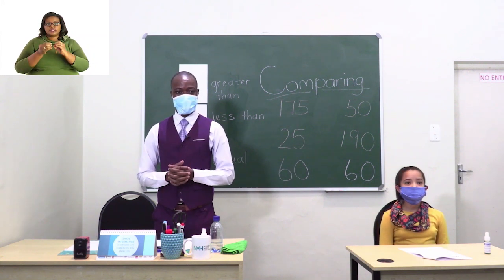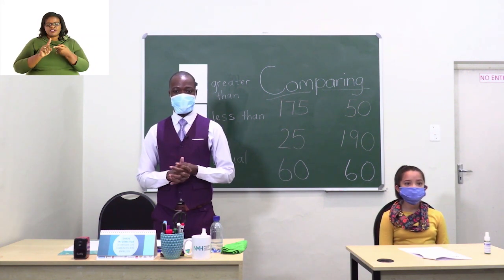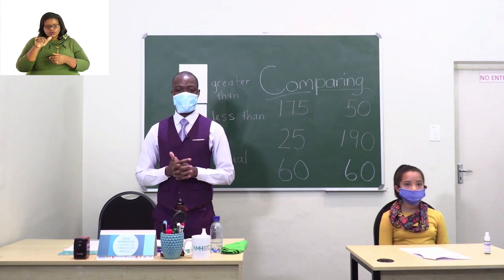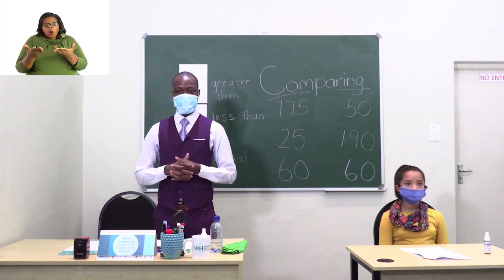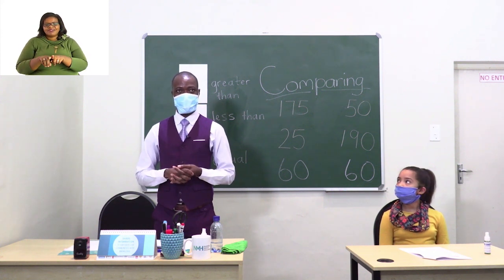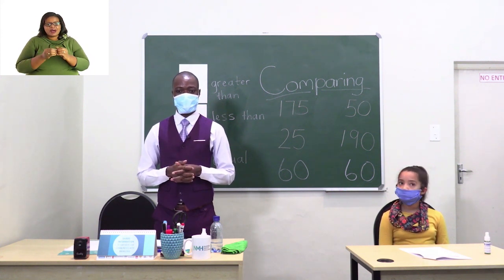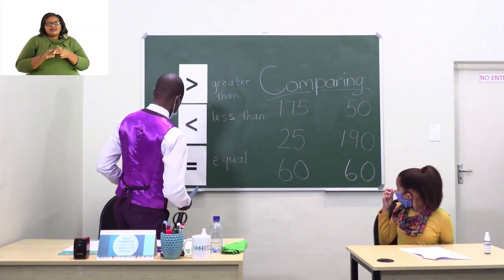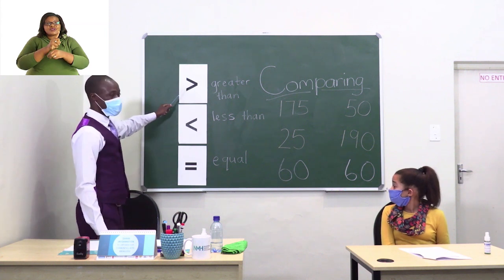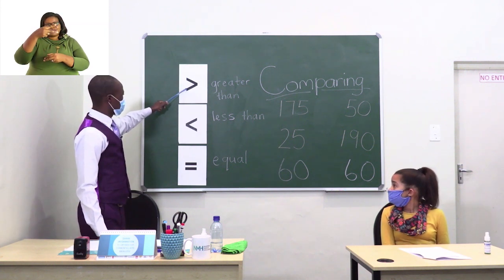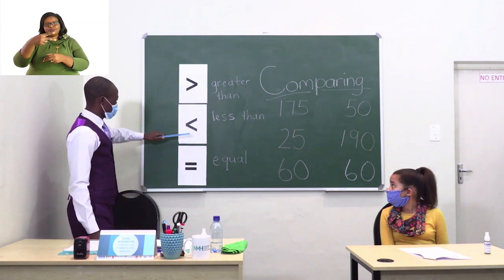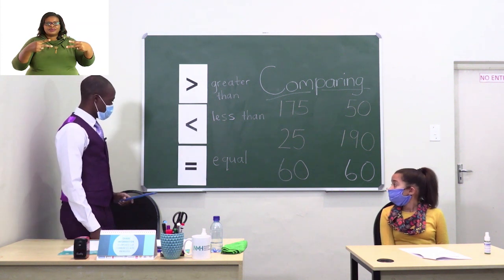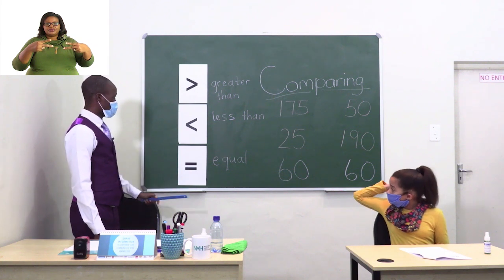We compare numbers to see which one is big, which one is small, or whether the numbers are of the same size. When we are comparing numbers, we use signs. The first one is called greater than, the second one is called less than, and the last one is called equal to.